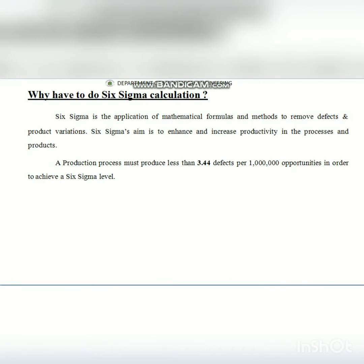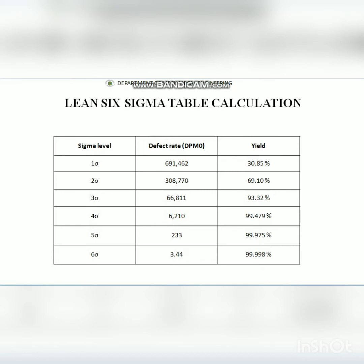We need to achieve 3.4 Defects Per Million Opportunities to reach Six Sigma level. Looking at the decision table: at One Sigma level, the yield percentage is 30.85%. As we refine from Two Sigma to Three Sigma and up to Six Sigma level, we can achieve 3.4 DPMO with a yield result of 99.998%.